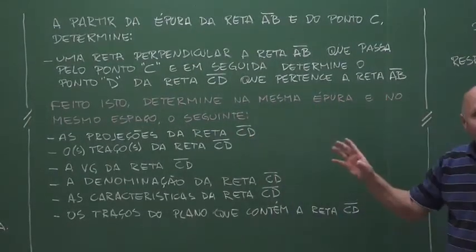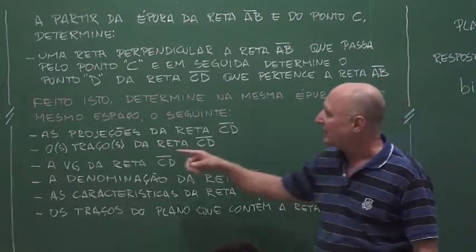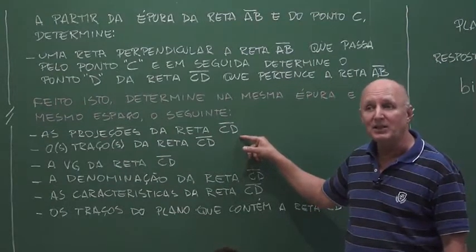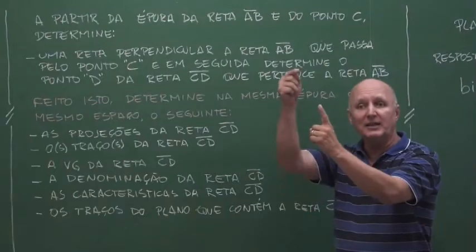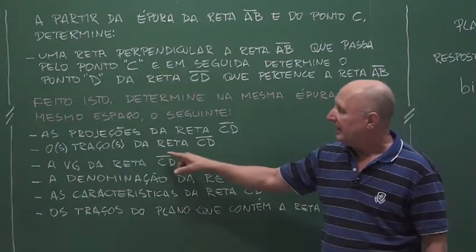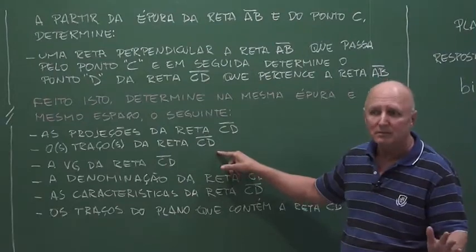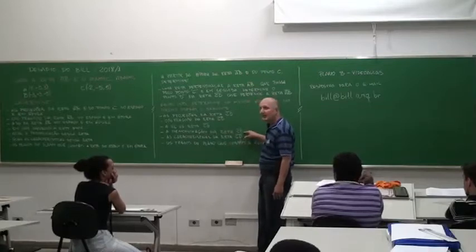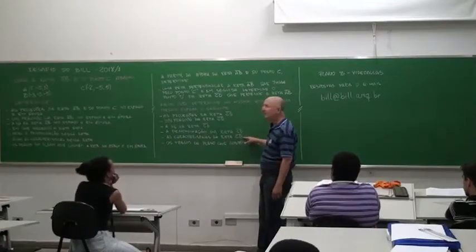Having done this, you will determine in the same epoch and space the following: line CD. You will determine it from the real magnitude of line AB — you will determine the real magnitude of AB and then determine line CD. Then, the traces of line CD, the VG of line CD, the real magnitude, and the classification of line CD — is it a profile line, a topo, a qualquer? What is this line CD?